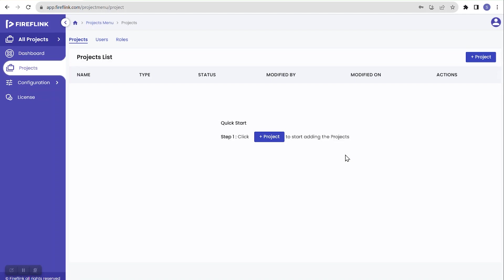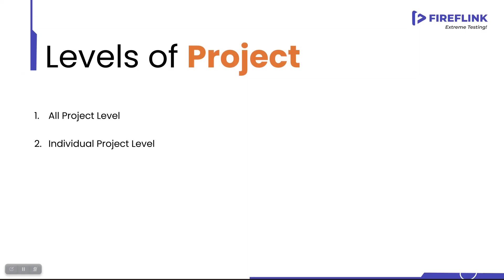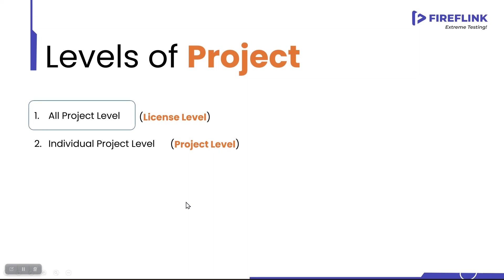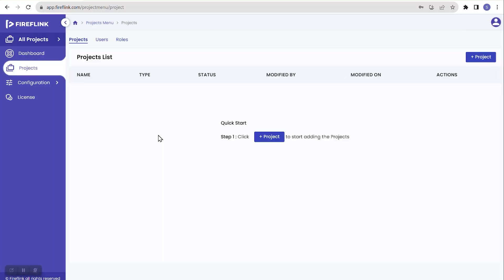Signing in navigates you to the actual FireFlink platform. In the FireFlink platform we have two levels: one is the license level, and the other is the individual project level. This license level we also call the 'all project level,' and the project level we call the 'individual project level.' Once we sign in, we always navigate to the all project level.